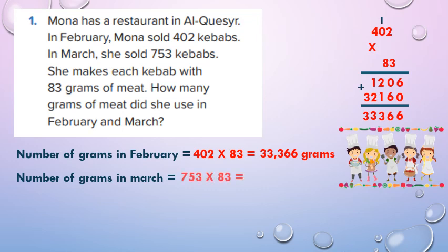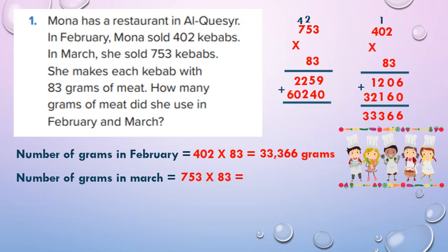Number of grams of meat in March: 753 by 83 grams. In our draft: 3 by 3 equals 9, 3 by 5 equals 15, carry up 1. 3 by 7 equals 21 plus 1 equals 22. Put 0, then start with the 10s. 8 by 3 equals 24, 8 by 5 equals 40 plus 2 equals 42, 8 by 7 equals 56 plus 4 equals 60.